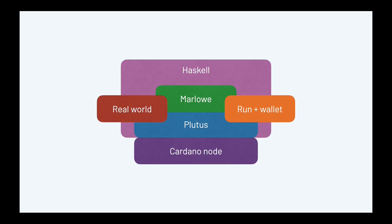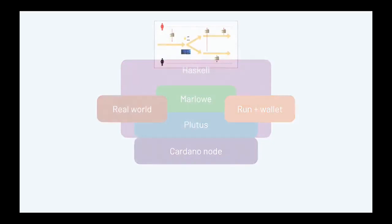Let's now look under the hood and see how Marlowe is executed on Cardano. We have a Cardano node on which Plutus is running. Plutus is a dialect of Haskell, and Marlowe is embedded in Haskell and executed using Plutus — so Marlowe sits on top of Plutus. Through Marlowe Run and attachment to a wallet, you can interact as an end user with a running Marlowe contract. It also gets linked to oracles sitting out there in the real world.